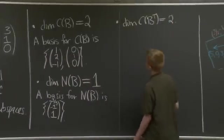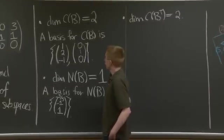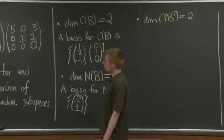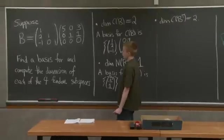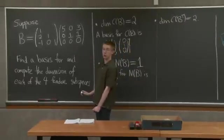It's just the number of pivots. So that's good. So it's 2. OK, and how do we find a basis for the row space? Well, there are a couple of ways of thinking about this.